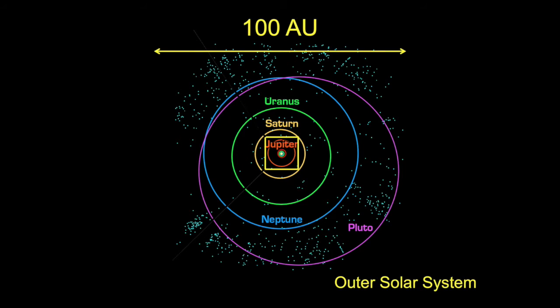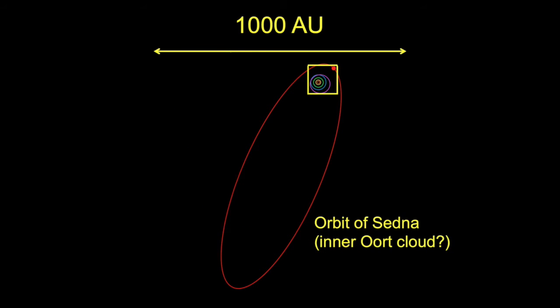Jumping another factor of ten to 1,000 AU, we reach the outermost extent of the orbit of one of the most distant known solar system objects: the candidate dwarf planet Sedna. Sedna was discovered relatively close — within 100 AU — but the outer edge of its long elliptical orbit gets nearly 1,000 AU from the Sun. This reaches the inner edge of what is often referred to as the Oort cloud, a very thin and tenuous cloud of little snowballs that become comets when they fall into the inner solar system — leftover ices from the formation of our solar system 4.5 billion years ago.